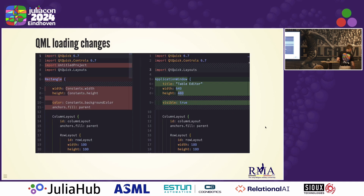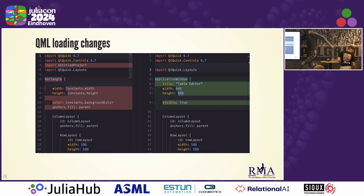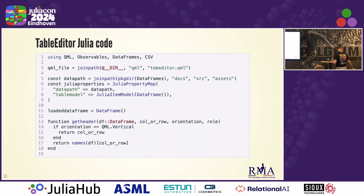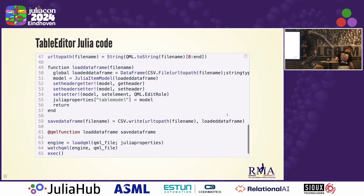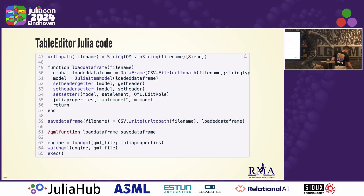Once we have the QML, to load it into Julia you need to make a few small changes, but these are fairly minor. As you can see, this is the complete diff from the automatic QML to the Julia-compatible QML file. Then we can load this into our Julia code. The bottom of the file is the same as before — we have the call to load QML to load the file. Before that, of course, there are a few more things because we now have a fully functional DataFrame editor.